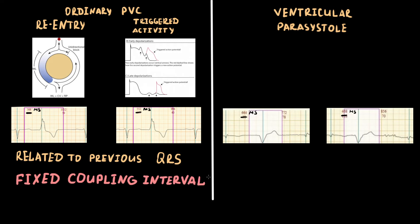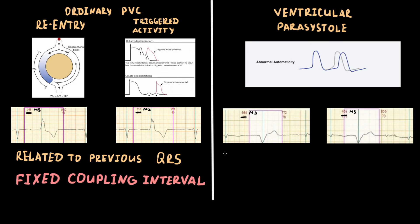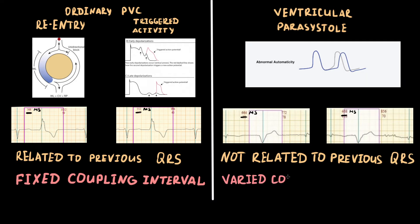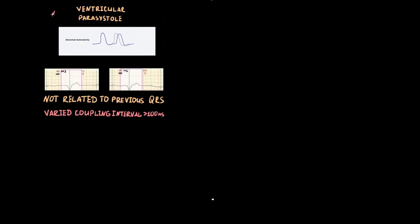In the case of ventricular parasystole, the coupling intervals are 688 ms and 468 ms — a difference of more than 100 ms. In ventricular parasystole, the mechanism is enhanced automaticity, which is independent from the sinus rhythm, so the coupling intervals vary. The difference should be more than 100 ms, as in our example. Therefore, the first criterion of ventricular parasystole is a varying coupling interval greater than 100 ms.